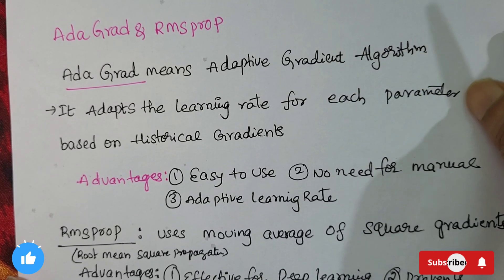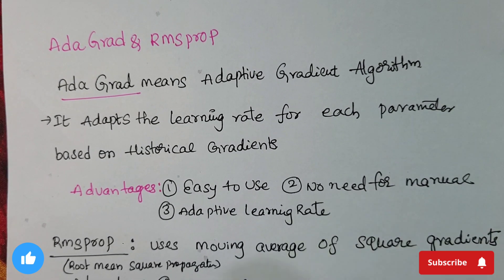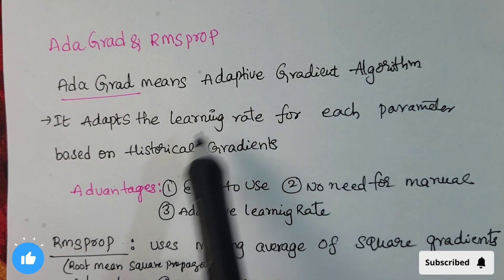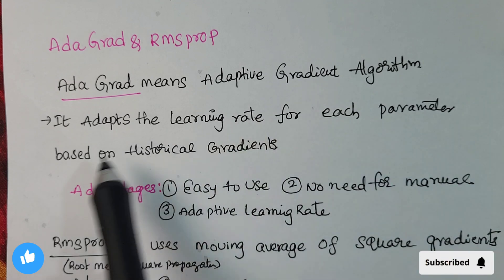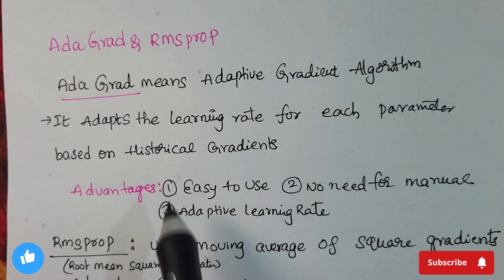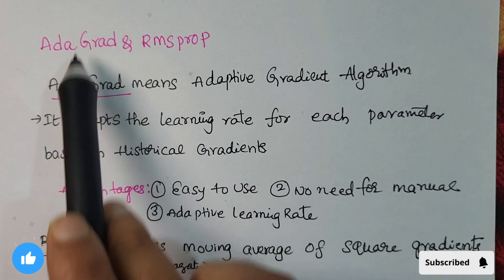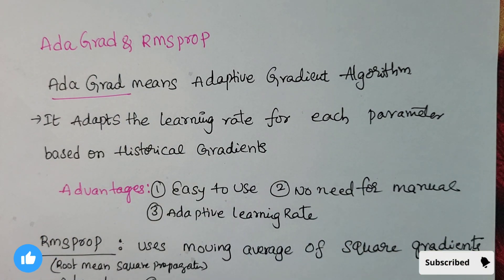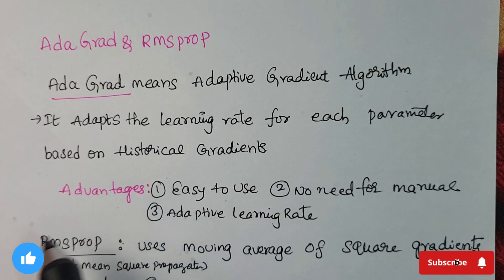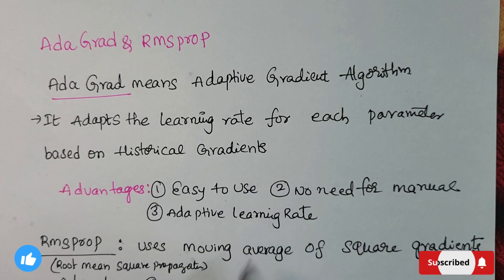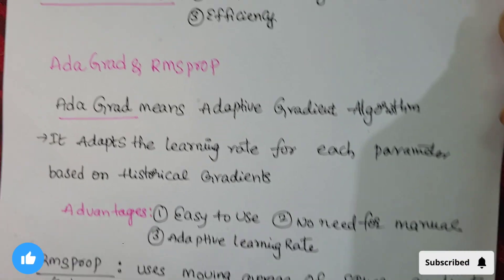Adagrad (Adaptive Gradient Algorithm) adapts the learning rate for each parameter based on historical gradients — a very important property. The advantages of Adagrad are: easy to use, no need for manual tuning, and adaptive learning rate.